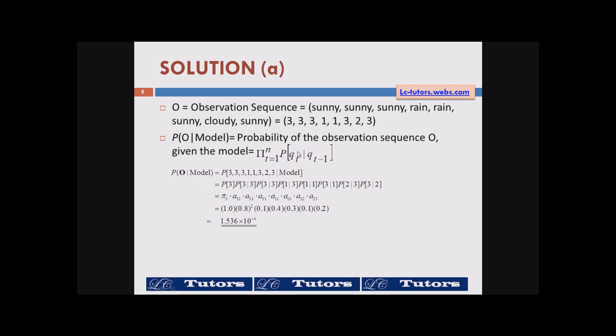This is the answer to this question. The probability of the observation sequence given the model. We have state three, three, three, one, one, two, three, two, three given the model. And the first probability is the initial probability p3. Actually p3 is we use the notation pi i, which is the initial, denote the initial state probability. That is we have three states. And out of those three states we are going to select one state to start with. So this is we have to start with the sunny state. So p3.